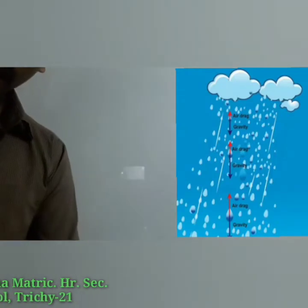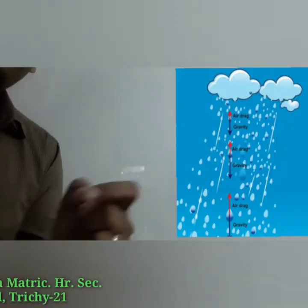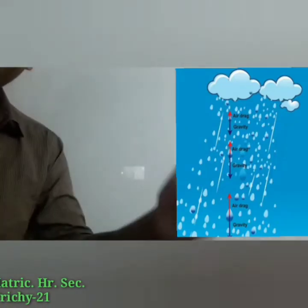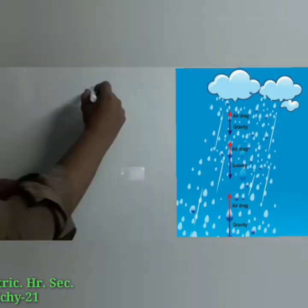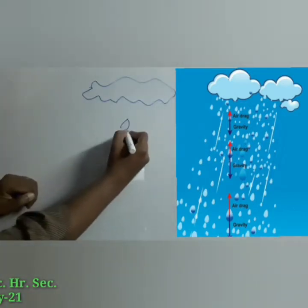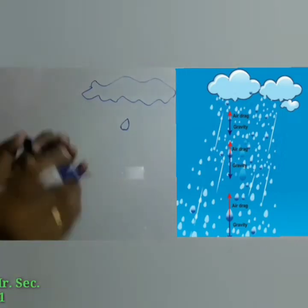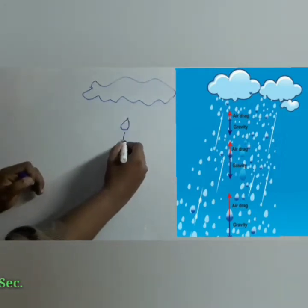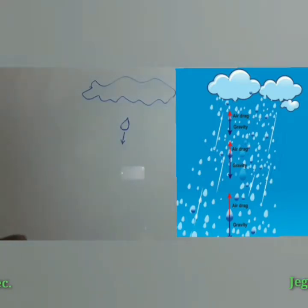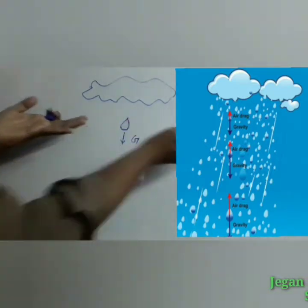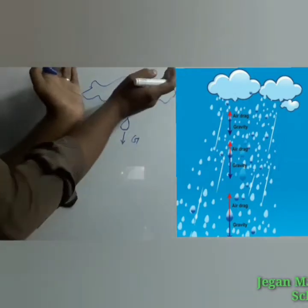When a raindrop gets detached from the cloud, it experiences both the downward gravitational force and the upward air drag force. We know that downward gravitational force is acting on the object, and the air layer is going to apply the upward force.